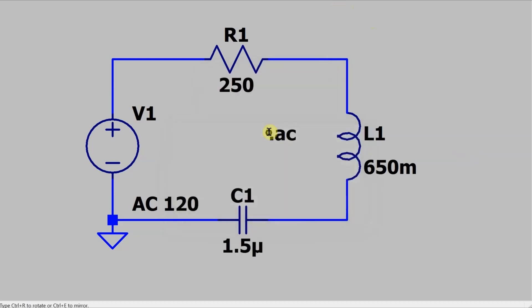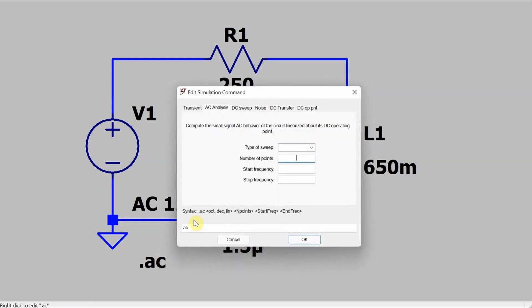And I'll do an AC sweep. So I'll just drop in dot AC, right click on it, and set the points. I'll do a linear sweep. The number of points doesn't matter as long as it's more than one. My start frequency is 60.